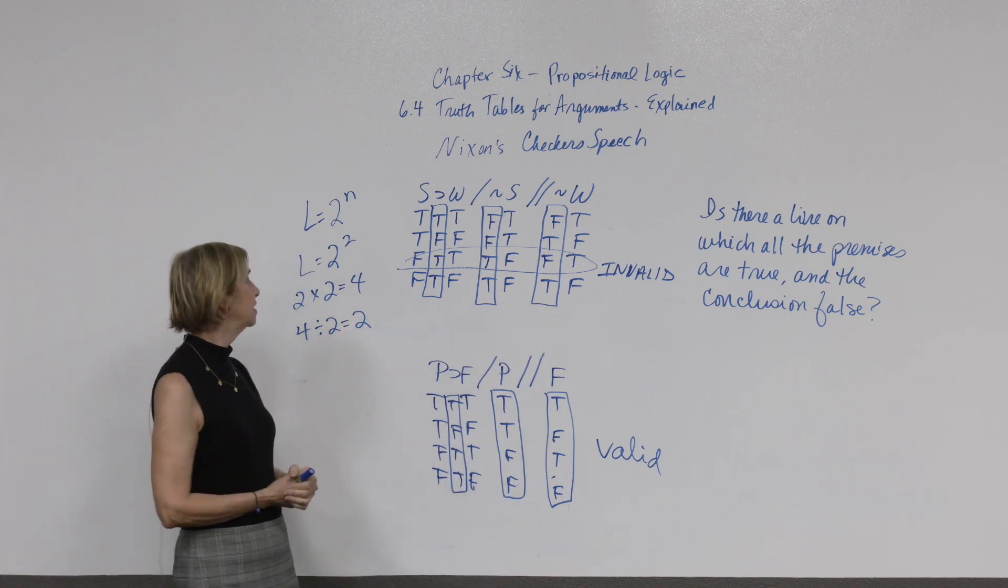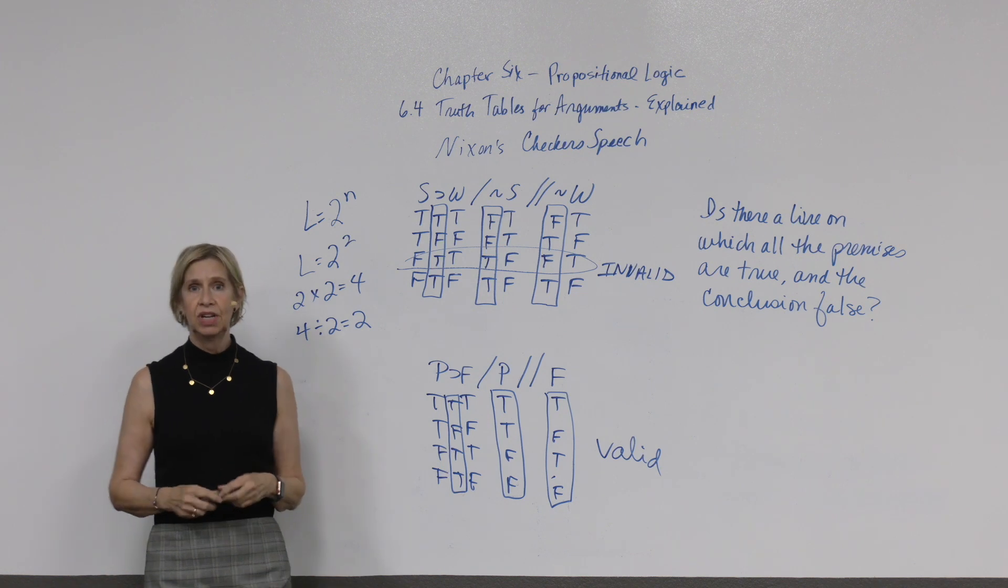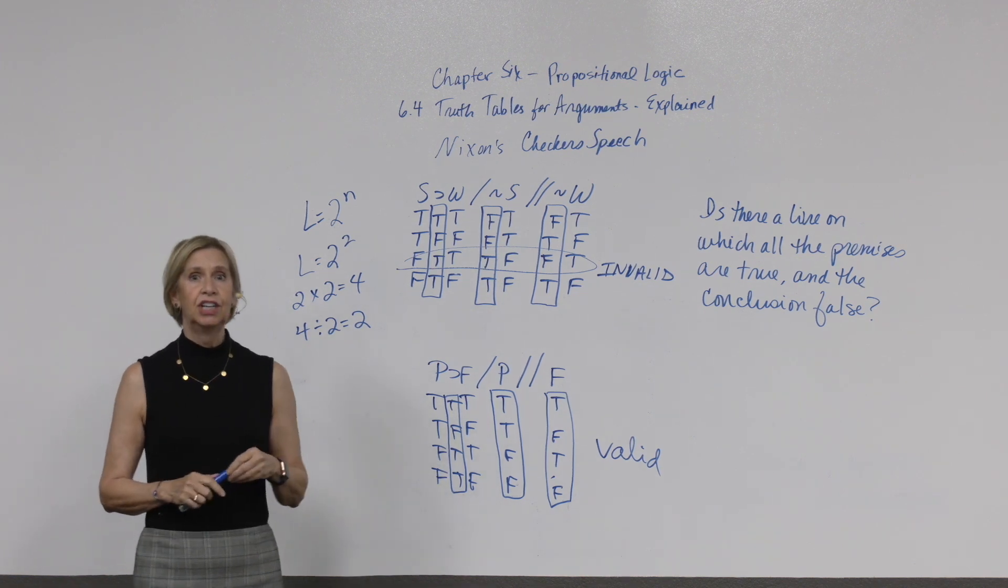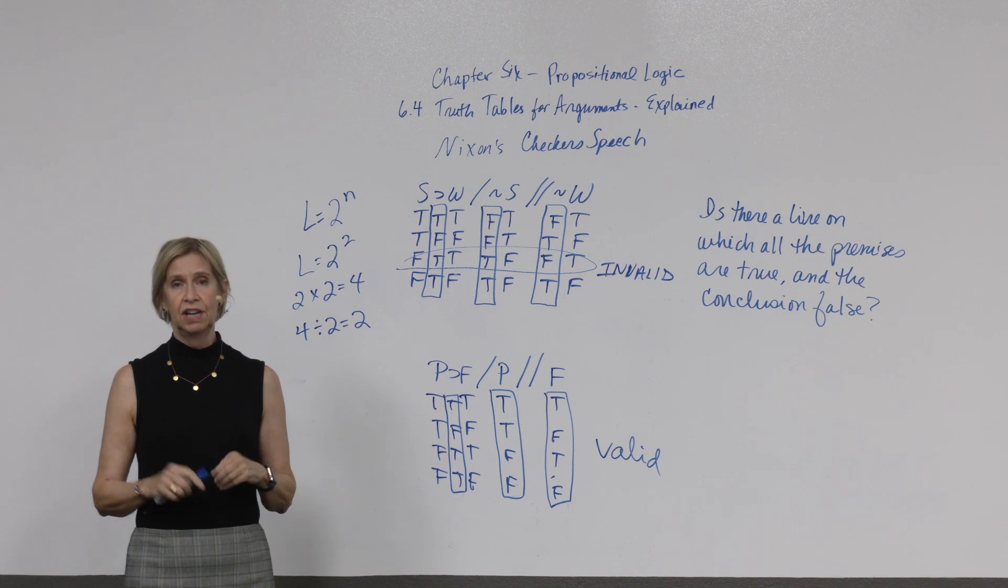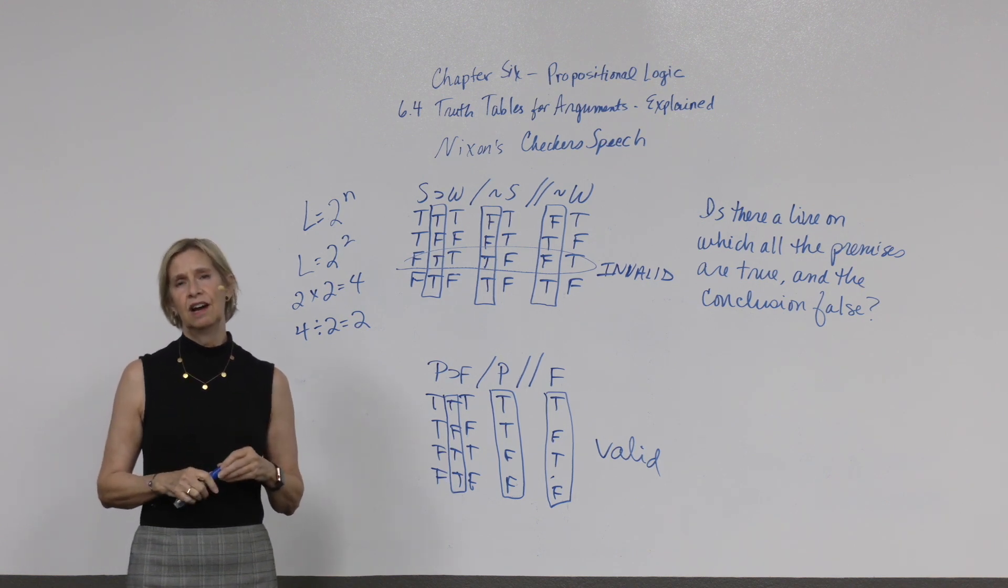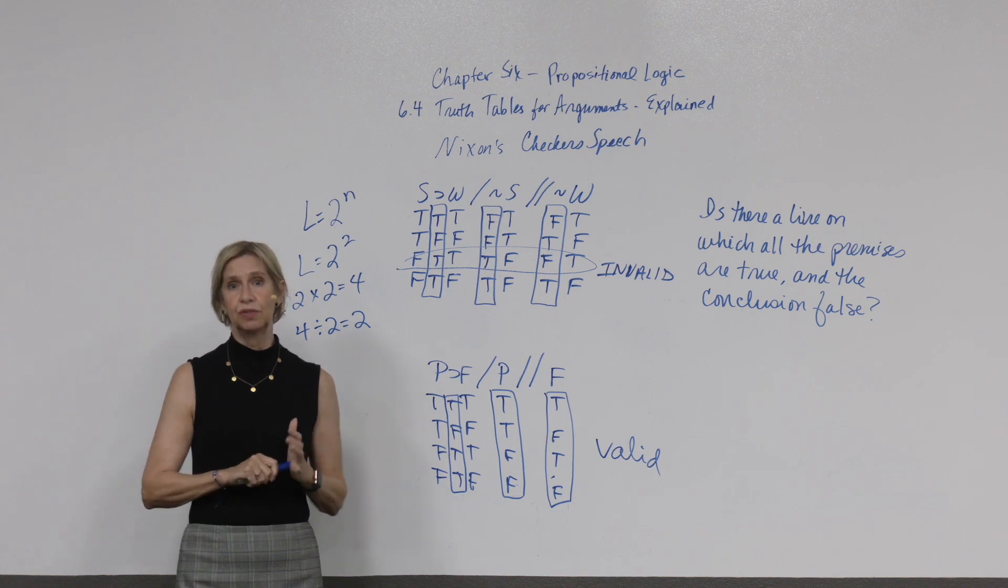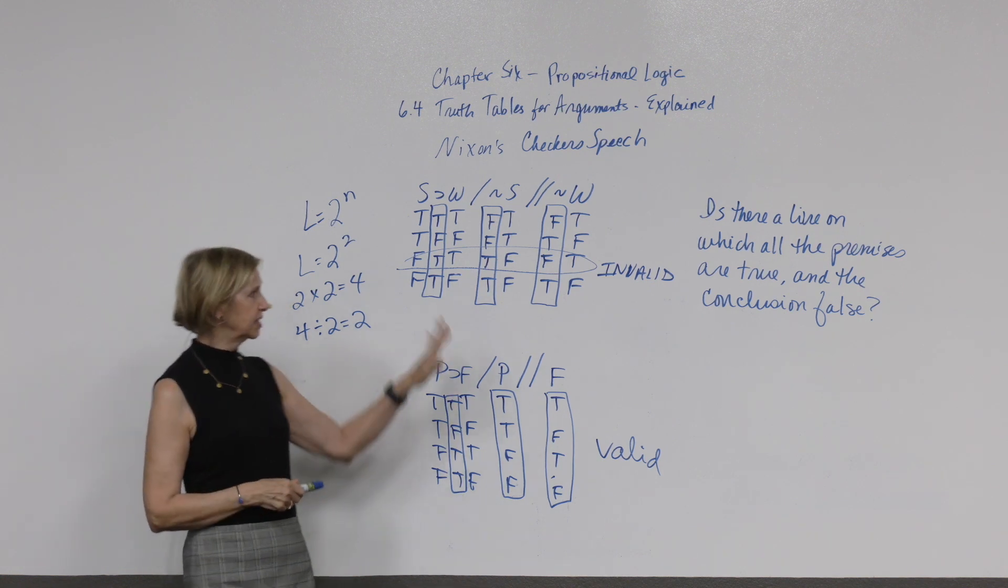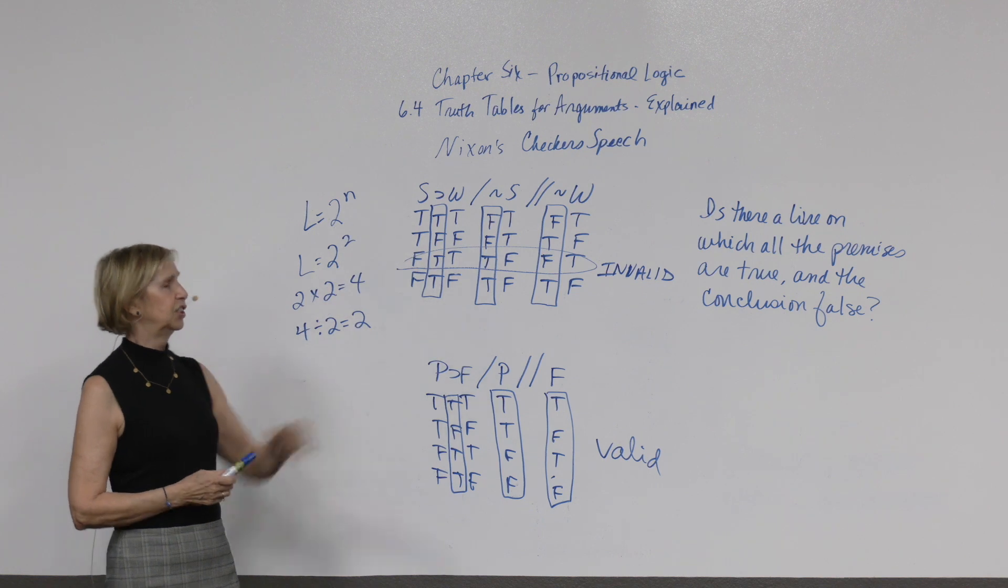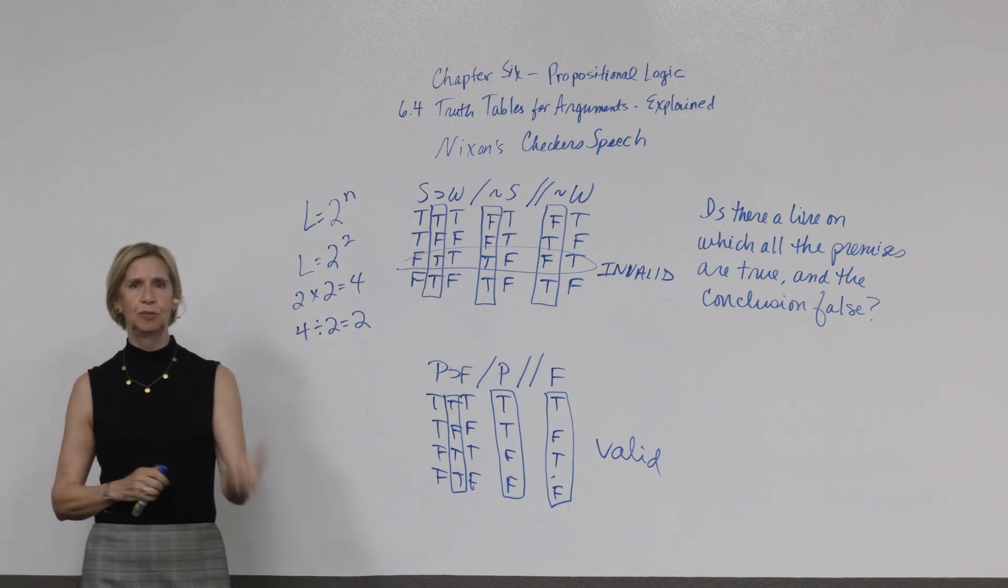So, that's all that's different about using a truth table to check for validity. When we get to chapter seven, you're going to learn some rules of inference for checking the validity of arguments. You're going to learn how to do natural deduction and create proofs to check the validity of arguments. But this is one way that you can check the validity of an argument and I hope that was helpful.